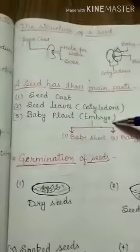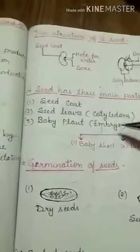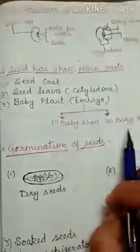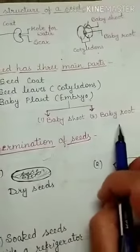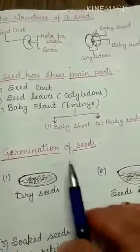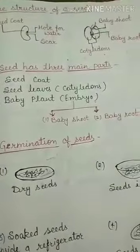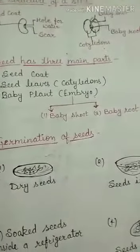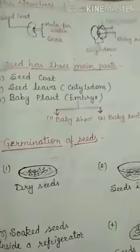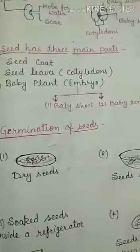The embryo has two parts: the baby shoot and the baby root. The baby shoot grows up to form the stem, leaves, and flowers. The baby root grows down into the soil and forms the roots of the plant.